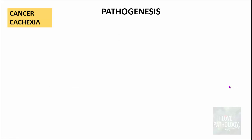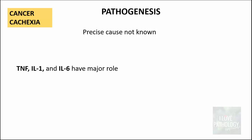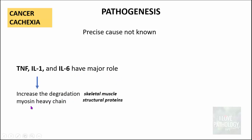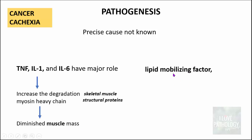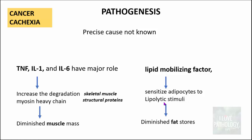The precise cause of cancer cachexia is not fully known, but proposed mechanisms include tumor cells producing tumor necrosis factor, interleukin-1, and interleukin-6, which increase the degradation of myosin heavy chain — a skeletal muscle structural protein — resulting in diminished muscle mass. Some tumors also produce a lipid mobilizing factor that sensitizes adipocytes to lipolytic stimuli, leading to diminished fat stores. These are the probable mechanisms of cancer cachexia.